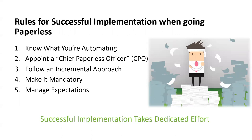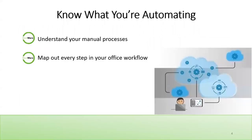When looking at implementing a new technology into your firm, there are some rules you can follow because successful implementation takes dedicated effort. Your firm really needs to develop a plan and stick to it when onboarding with an automation service provider. We are going to go through these five simple steps: know what you're automating, appoint a chief paperless officer, follow an incremental approach, make it mandatory, and manage expectations.